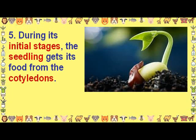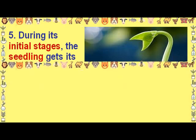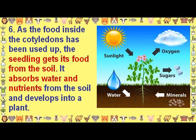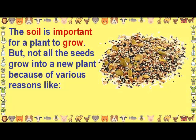During its initial stages, the seedling gets its food from the cotyledons. As the food inside the cotyledons is used up, the seedling gets its food from the soil. It absorbs water and nutrients from the soil and develops into a plant. The soil is important for a plant to grow.